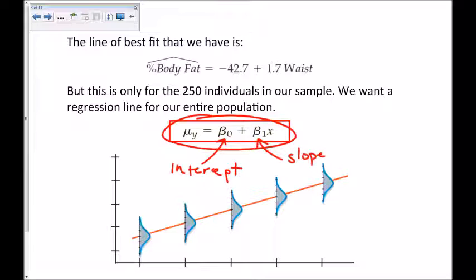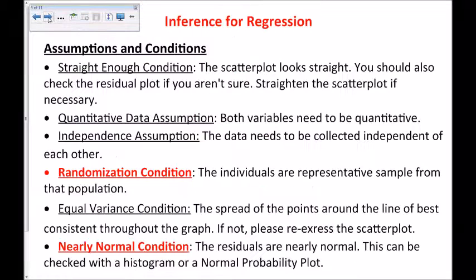Now, the one thing the book points out is that this mu sub y, the reason it's not y, is that for any given x value, the y will actually be a distribution of y's, not just a single value.